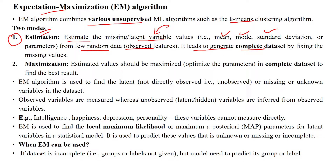After estimating the hypothesis, the estimated hypothesis is then maximized by optimizing the parameters. The EM algorithm is used to find latent variable values — latent variable values are missing data variables. The observed variables are measured, whereas unobserved variables are inferred from the observed variables.